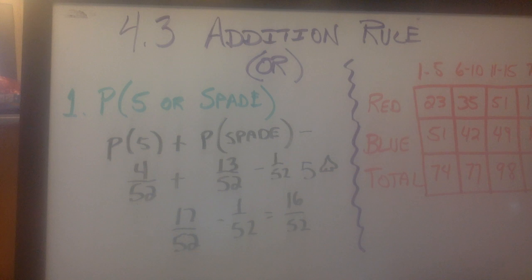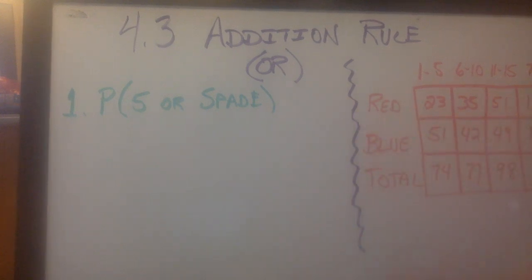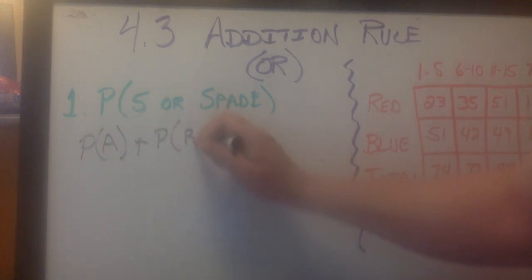Now that's called mutually exclusive. I do not like those terms, so I call it overlap. Our formula for this is the probability of 5 plus the probability of spades minus the probability of the 5 of spades. The probability of A plus the probability of B minus the probability of A and B. You probably saw something called a Venn diagram. This is A, this is B. The probability of A is this whole circle, the probability of B is that whole circle, minus one of these because you counted it twice.